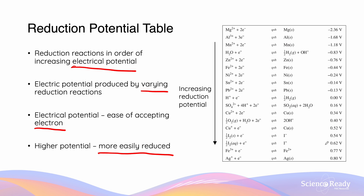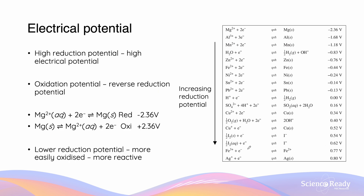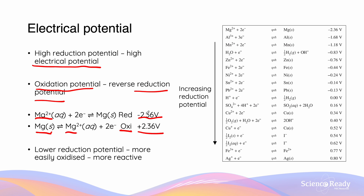These reduction potentials will be provided to you in the HSC on the data sheet. A higher reduction potential correlates with a high electrical potential. We also know that reduction is the gaining of electrons, and that oxidation is the reverse — the loss of electrons. So the oxidation potential is just the opposite of the reduction potential. For example, the reduction of Mg²⁺ is given as −2.36 V, meaning the oxidation of magnesium into Mg²⁺ is equal to +2.36 V. So a lower reduction potential means a higher oxidation potential, meaning it is more easily oxidized and therefore more reactive.